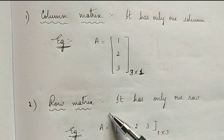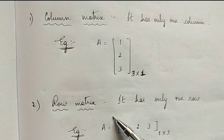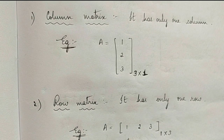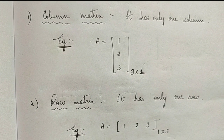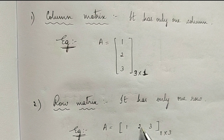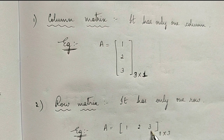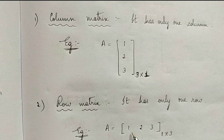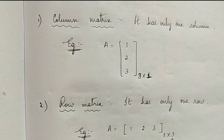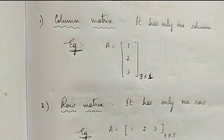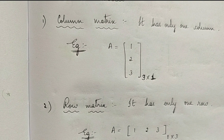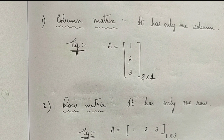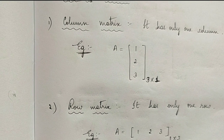Let's see what is a row matrix. It has only one row — this has only one row. One row and the number of columns can be as many as we want. So this example is 1 cross 3. The order of a row matrix is always 1 cross m, where m can take the values 1, 2, 3, 4, etc.